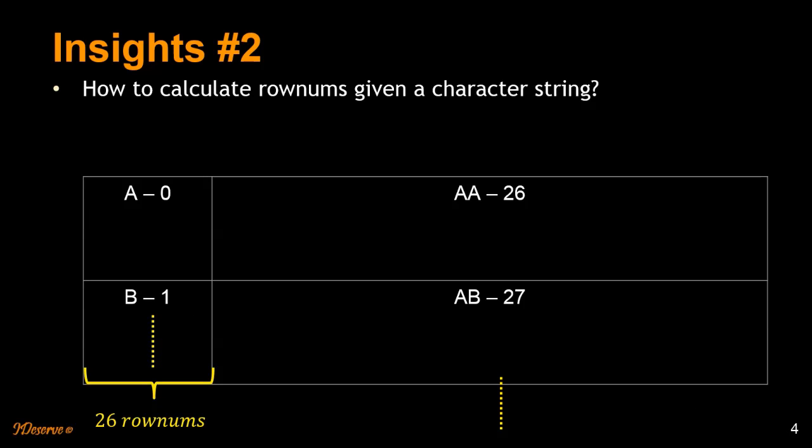The question is how to calculate row numbers given a character string. For single letters, we already know designated row numbers A to Z go from 0 to 25. How about AA? How do you calculate the row number for AA? The first step is to convert base 26 to base 10.